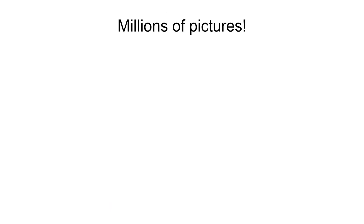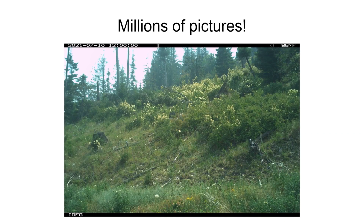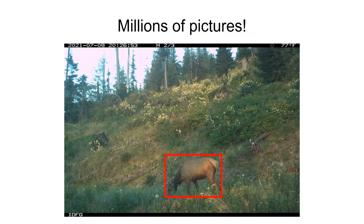We use pictures taken at specific time intervals and motion-trigger pictures that fall within predefined time intervals in our estimates. This results in millions of pictures, many of which do not contain an animal — either because there was not one there during the time interval, or the motion trigger may have been activated by wind-blown vegetation or snow. To help screen out the blanks, we use artificial intelligence software to identify pictures that contain animals. IDFG staff then review these photos and categorize the species.